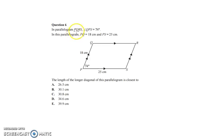In parallelogram PQRS, the angle QPS, so we're looking at angle P, is 74 degrees. They've labeled that. In the parallelogram, PQ is 18 and PS is 25.